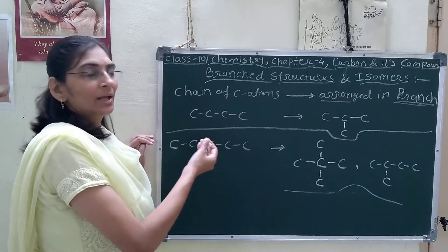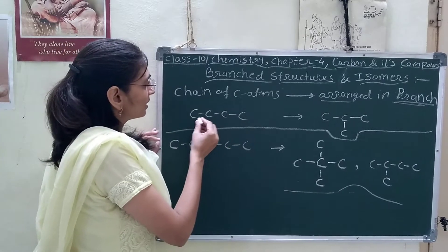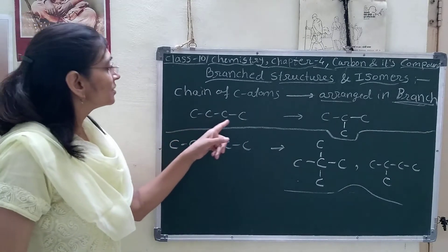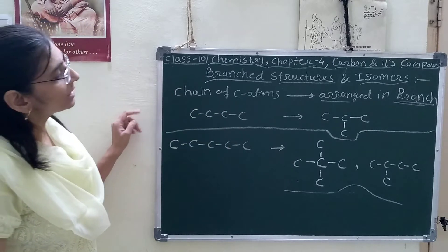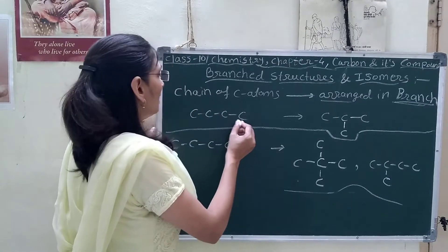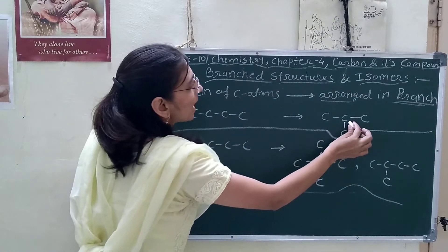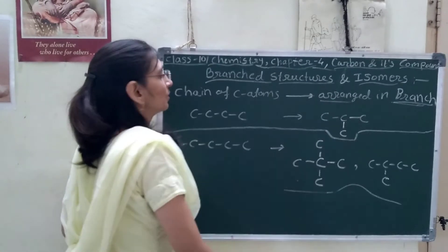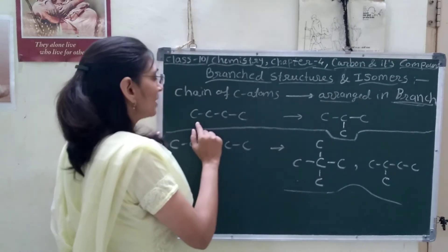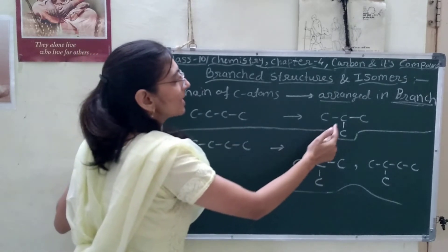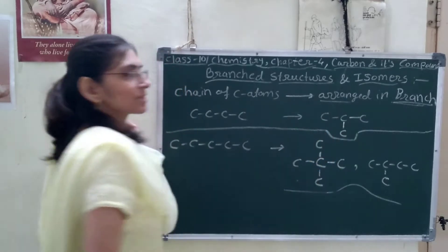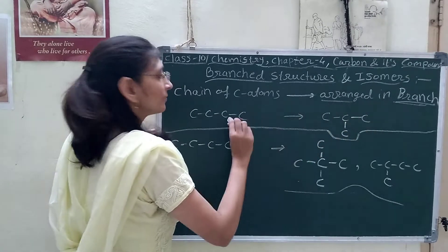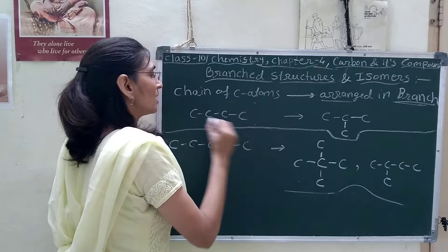Propane, butane, pentane — these are having the open chain structure where carbon atoms are attached in chain form. But today we will see that carbon can also attach with a branch structure. It can make branch structure also — it is not necessary to have only chain structure. It can be arranged in branch structure. So this is the isomer of this particular chain structure.